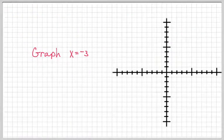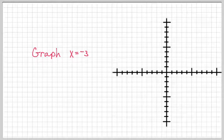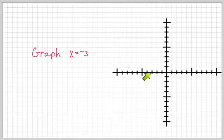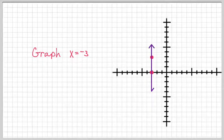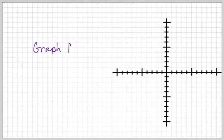And let's graph x equals negative 3. So I just need to plot two points that have an x value of negative 3. Here's one — on the x-axis, I count out to negative 3 and put my dot. Then I find some other point where the x value is negative 3 and draw a line through them. All right, one more.